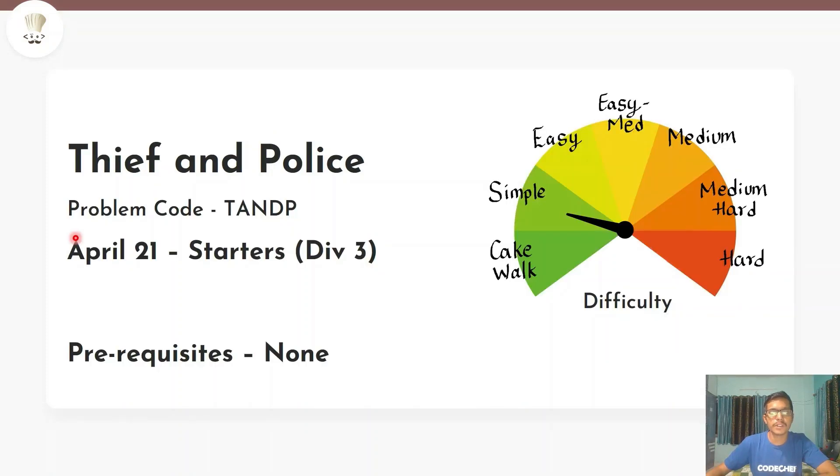The problem that we are going to discuss today is Thief and Police. The problem appeared in April 21 starters which is for Division 3 and has a difficulty level of simple. There are no prerequisites to solve this problem.